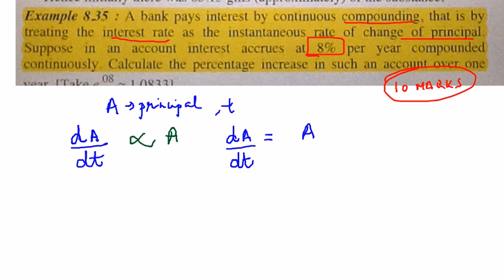So you can also say this k is a constant, but in this particular scenario k will be the rate of interest. And you see that he is given the rate of interest as 8%.